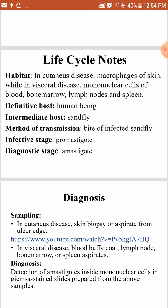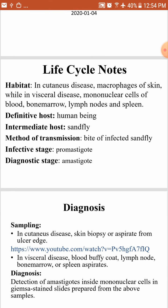In the case of Leishmania tropica, which causes cutaneous leishmaniasis, the habitat is the skin — the parasite is engulfed by macrophages of the skin. While in the case of visceral leishmaniasis, the habitat is the organs of the lymphoreticular system, which includes the spleen, the lymph nodes, the bone marrow, and blood.